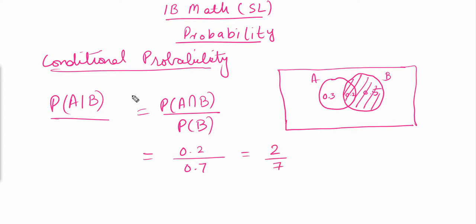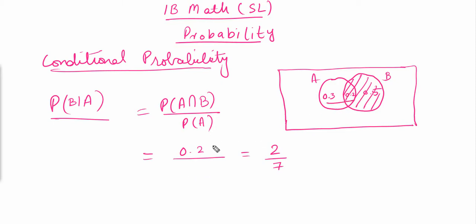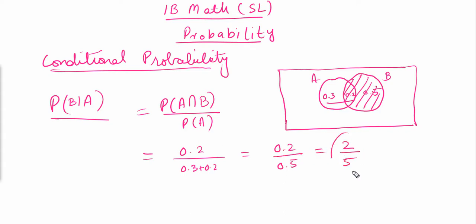Now let's find P(B|A). The numerator stays the same at 0.2, but the denominator becomes P(A): 0.3 plus 0.2 equals 0.5. So it's 0.2 over 0.5, giving a conditional probability of 2/5. This is how we find conditional probability.